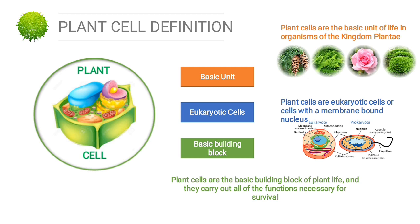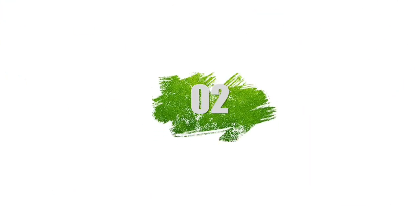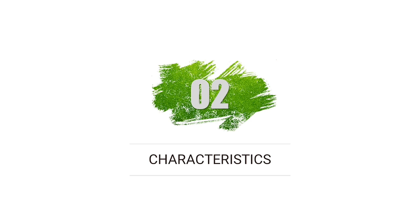The last definition: plant cells are the basic building blocks of plant life and carry out all functions necessary for survival. Photosynthesis — the making of food from light energy, carbon dioxide, and water — occurs in the chloroplast. The energy molecule ATP is produced through cellular respiration in the mitochondrion.